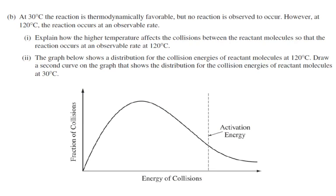The next part: at 30 degrees the reaction is thermodynamically favorable, but no reaction is observed. However, at 120 degrees, the reaction occurs at an observable rate. So delta G says this reaction ought to go, but at 30 degrees it doesn't happen. That's like having a candle in a bunch of oxygen — thermodynamically it should go, but until you heat it up or light it, it's not going to happen.